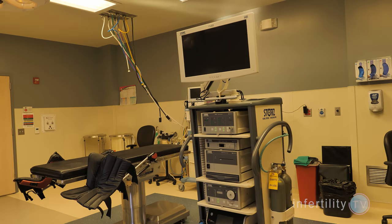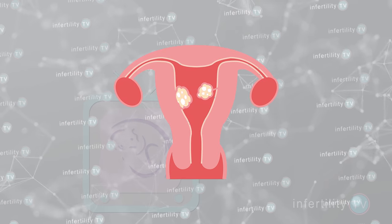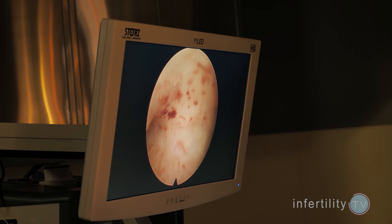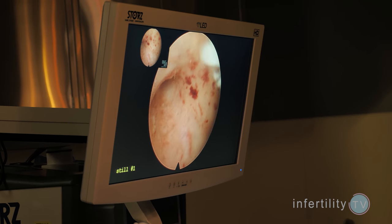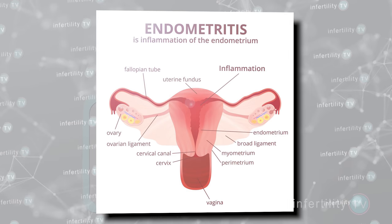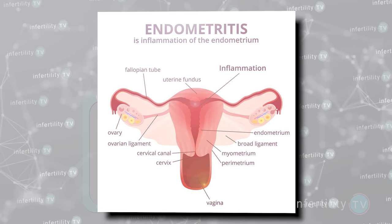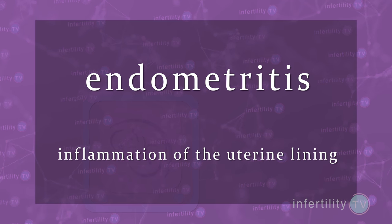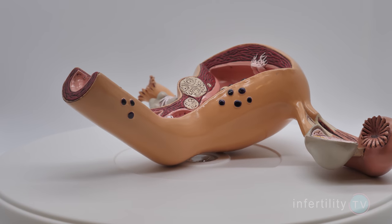Most anatomic problems with the uterus can be fixed surgically, but not all of them. Sometimes new problems can arise as a result of surgery on the uterus. For example, removing a mass such as a fibroid could cause scar tissue to form inside the uterine cavity. It is important to repeat a uterine cavity evaluation after any corrective surgery before proceeding with embryo transfer. One reason we like hysteroscopy is that it also allows us to look for endometritis. Don't confuse this with endometriosis, which is a different problem. Endometritis is inflammation of the uterine lining, usually caused by bacteria and typically treated with antibiotics.